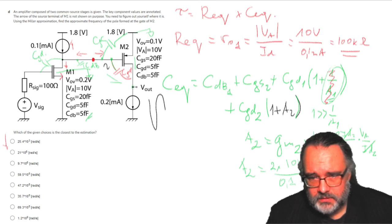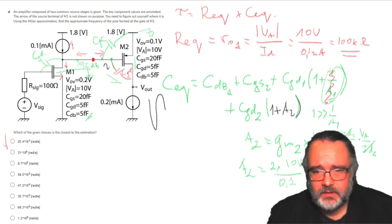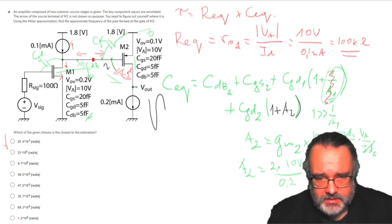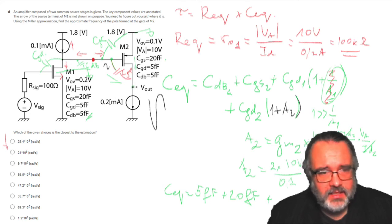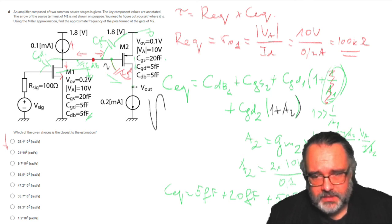For A2 I get 2 times VA, which is 10 volts, divided by V overdrive, which is 0.1. This is 200.